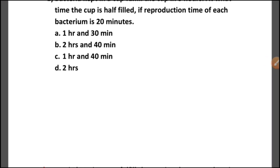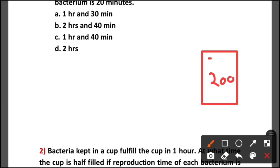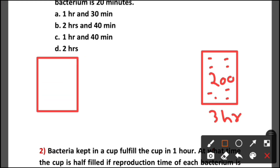You need to know an easy example of this question, so listen carefully. Suppose the cup can hold a maximum of 200 bacteria. This cup is fulfilled — it holds 200 bacteria. You have to know the number of bacteria. So for this cup fulfilled in 3 hours, in the half-filled cup, how much bacteria can be found? 100 bacteria.